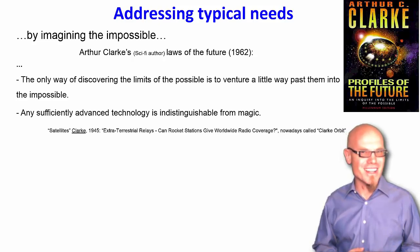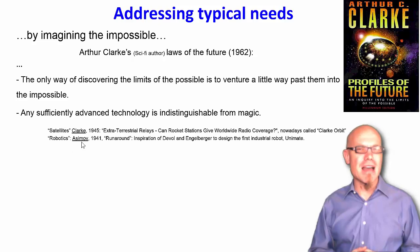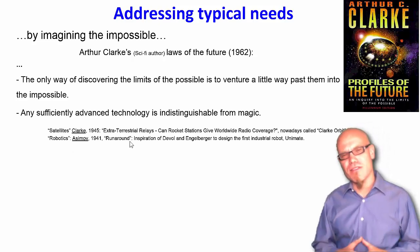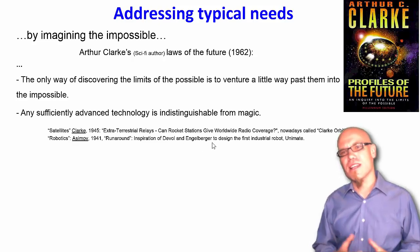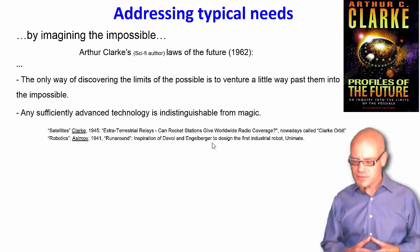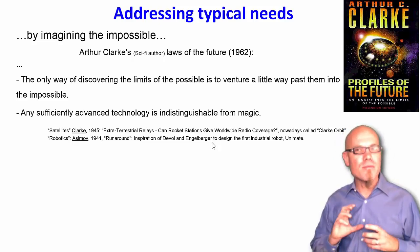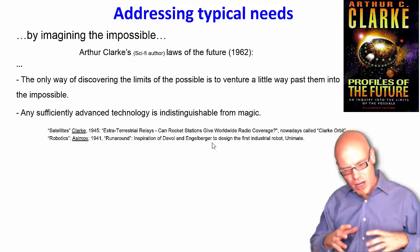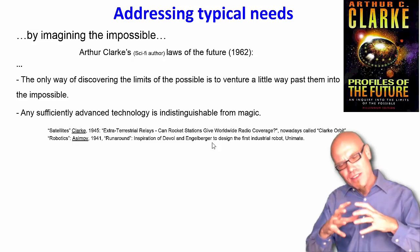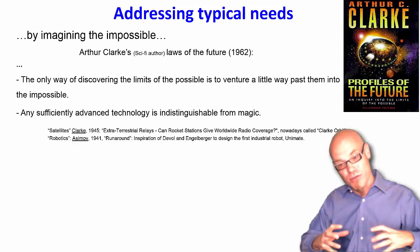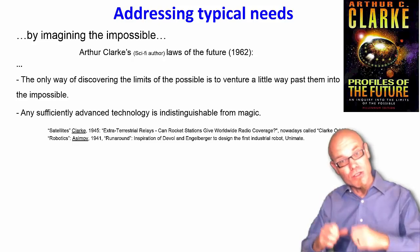Nowadays we call them satellites, and the orbit where satellites circle around the earth is called the Clarke orbit — and he was a science fiction writer. Something very similar happened with another seminal science fiction writer, Asimov, and the invention of industrial robotics. The inventors of the first industrial robots inspired themselves from the writing of Asimov. Technology is path dependent — we have to build on one thing and then the other, venturing all the time a little bit from the possible into the impossible.